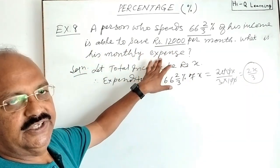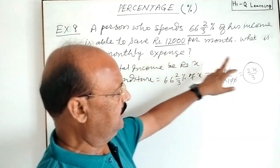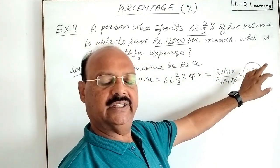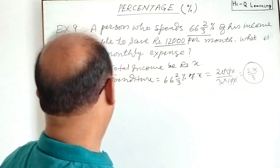So this is the expenditure. Finally we have to find out monthly expenditure, so first of all we need to find the value of X, and after putting the value of X here you will get the total expenditure of the person.